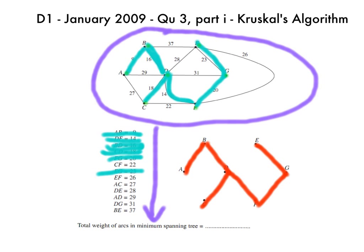And the absolute final thing we have to do to answer this question is, if we go down the bottom, total weight of the arcs in the minimum spanning tree, so we just have to add them up. We get 9, add 14, add 16, add 18, add 20, and 23, and when we do that, the sum comes to 100.